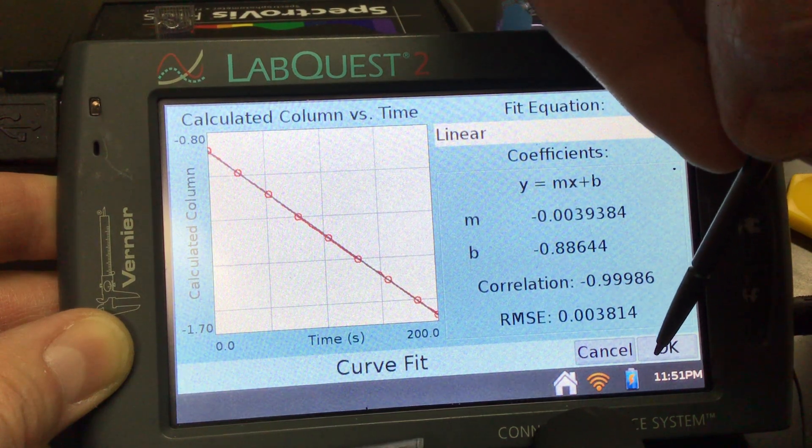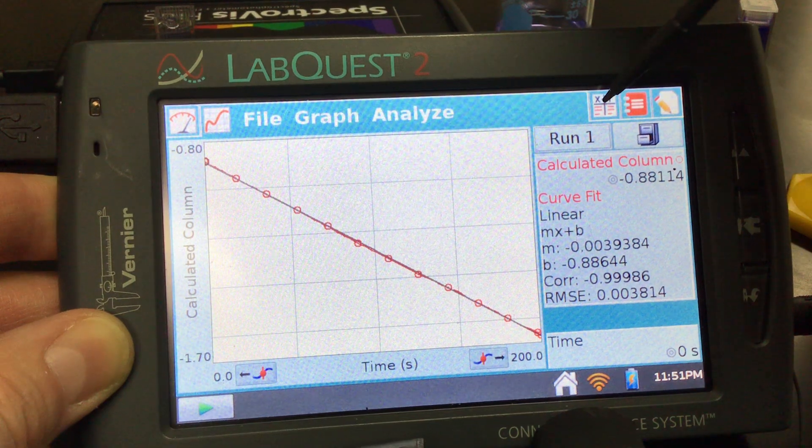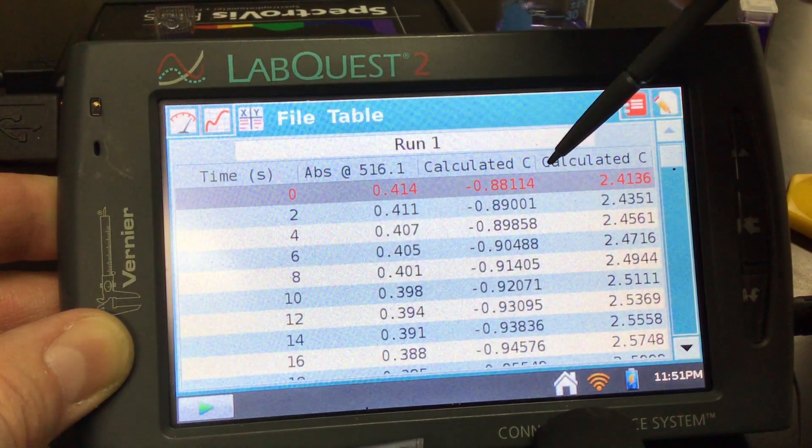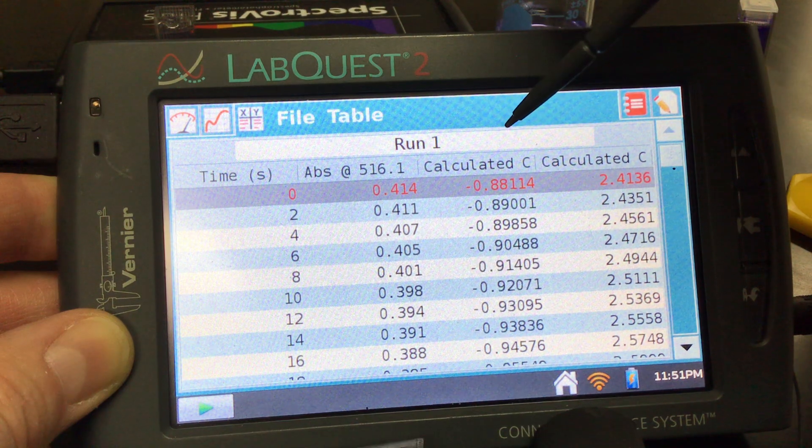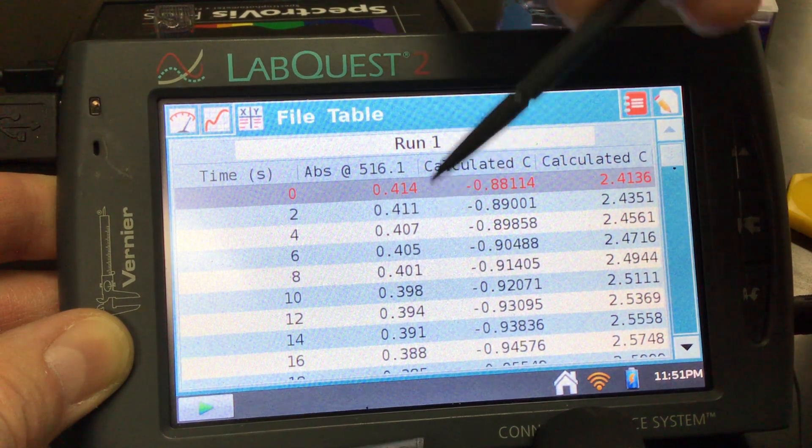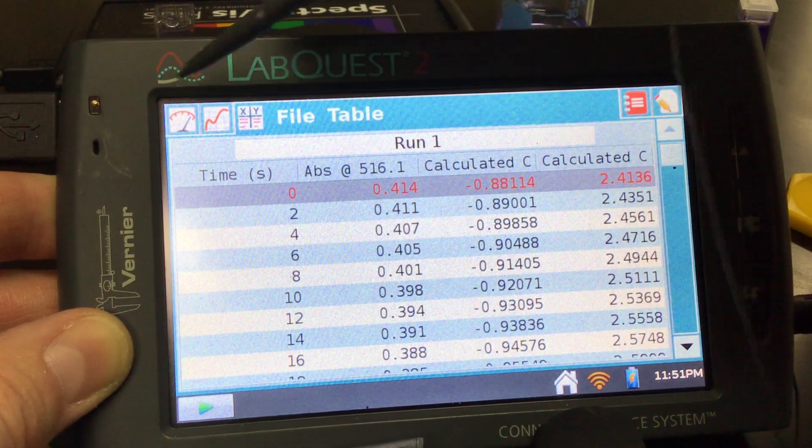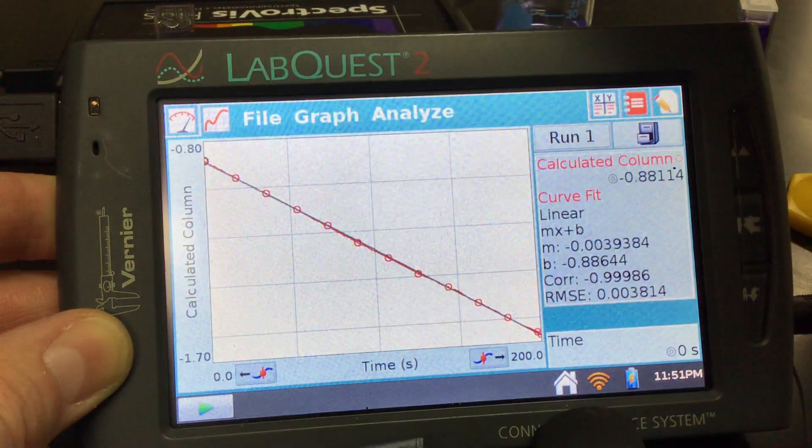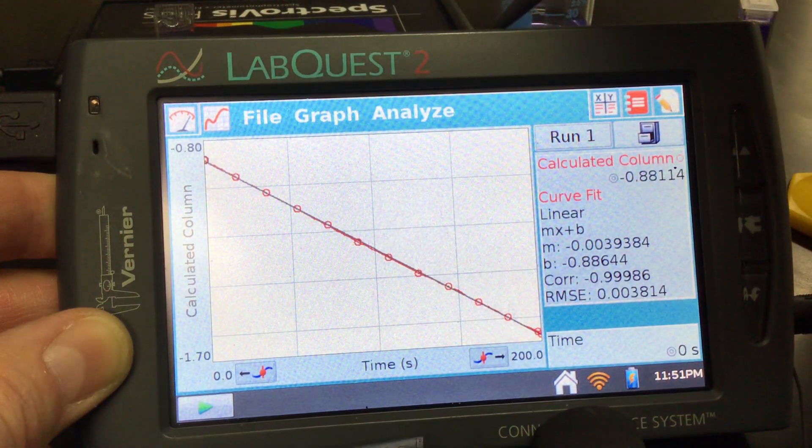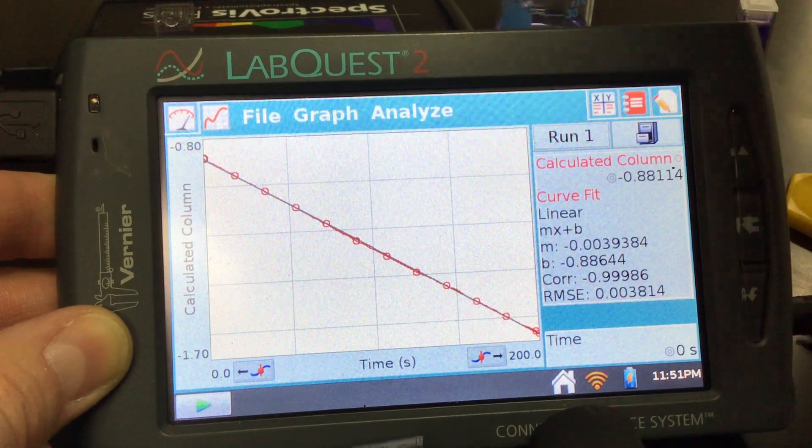There's other fun things that we can do with the data. If we wanted to, we can look at the data table itself and also maybe look at half-life, looking at when your concentration goes down by half, looking at two data points there as another thing that we could possibly do. That's your crystal violet and sodium hydroxide kinetics lab, looking at the data time based. Thanks for watching.